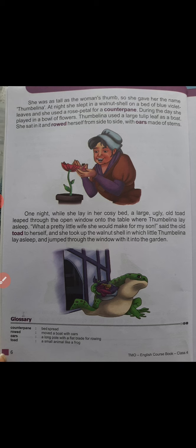At night, Thumblina slept in a walnut shell on a bed of blue-violet leaves, and she used a rose petal for a counterpane — counterpane means bedspread. During the day, she played in a bowl of flowers.